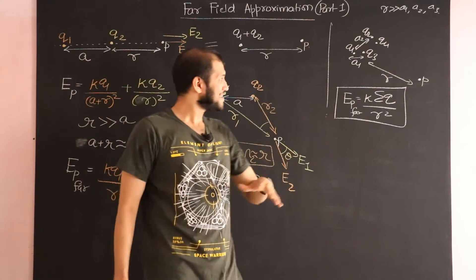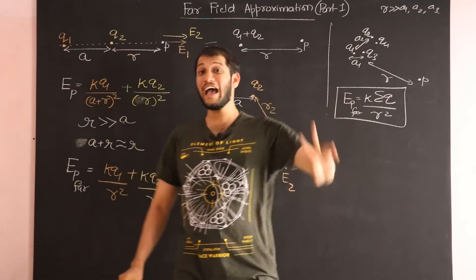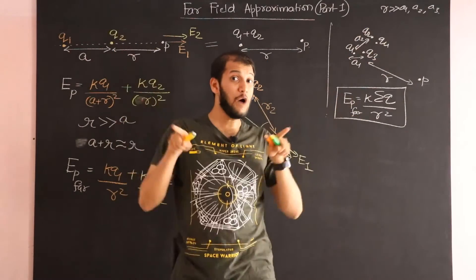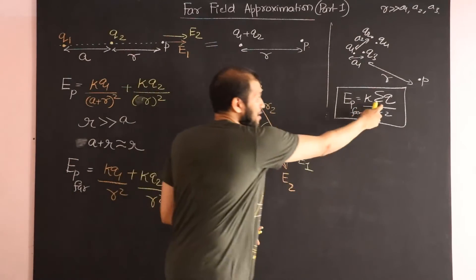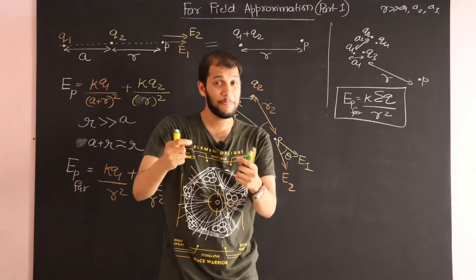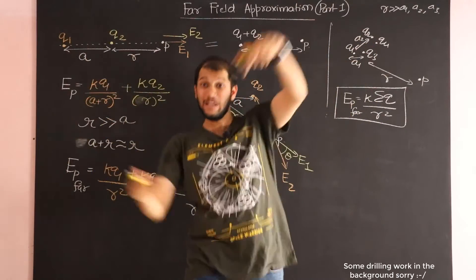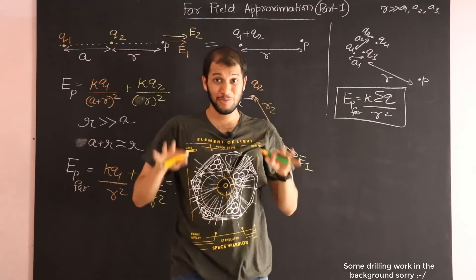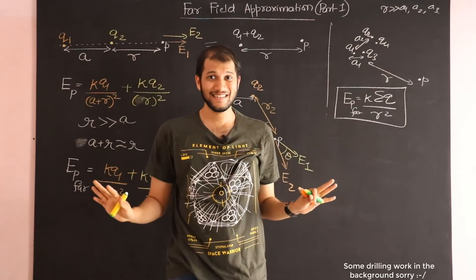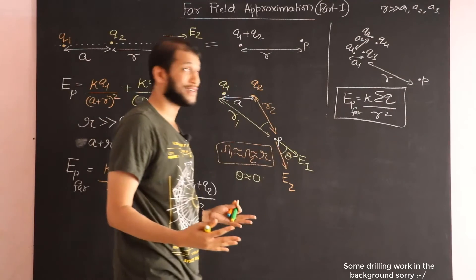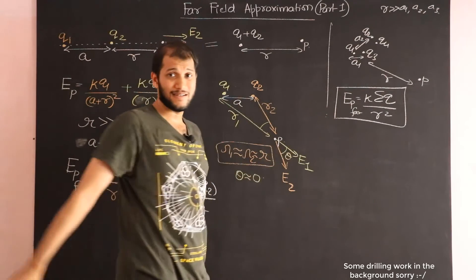And this tells us that the field far away can only have two configurations: either radially outwards if sigma Q turns out to be a positive number, or radially inwards if sigma Q turns out to be a negative number. That's it. That's amazing when you think about it. So, let's summarize the result.